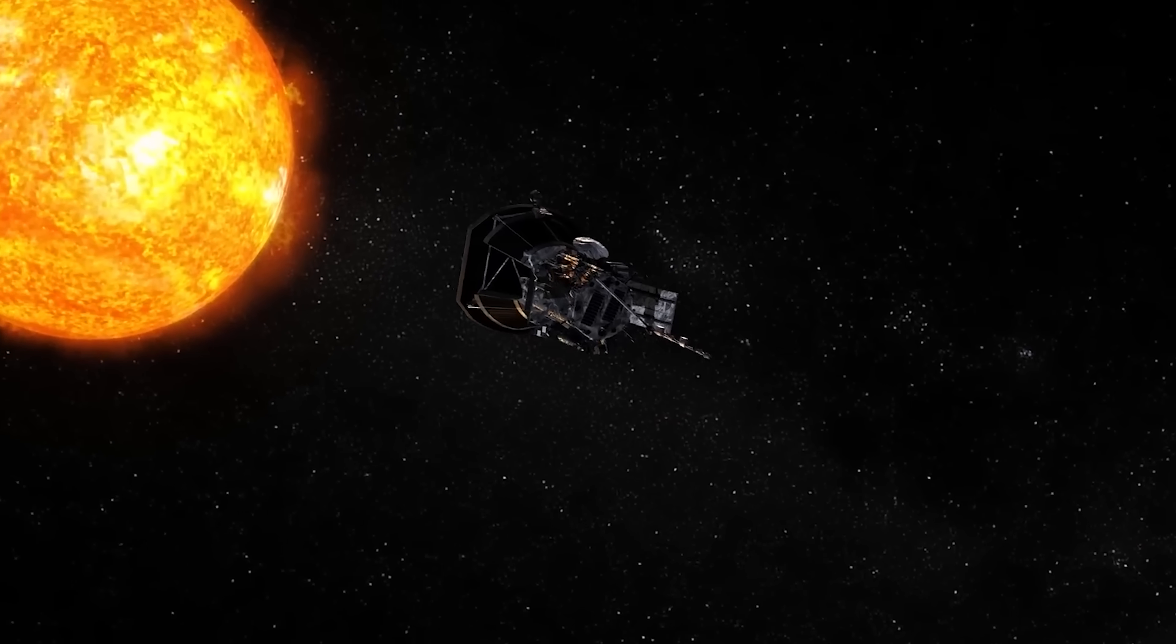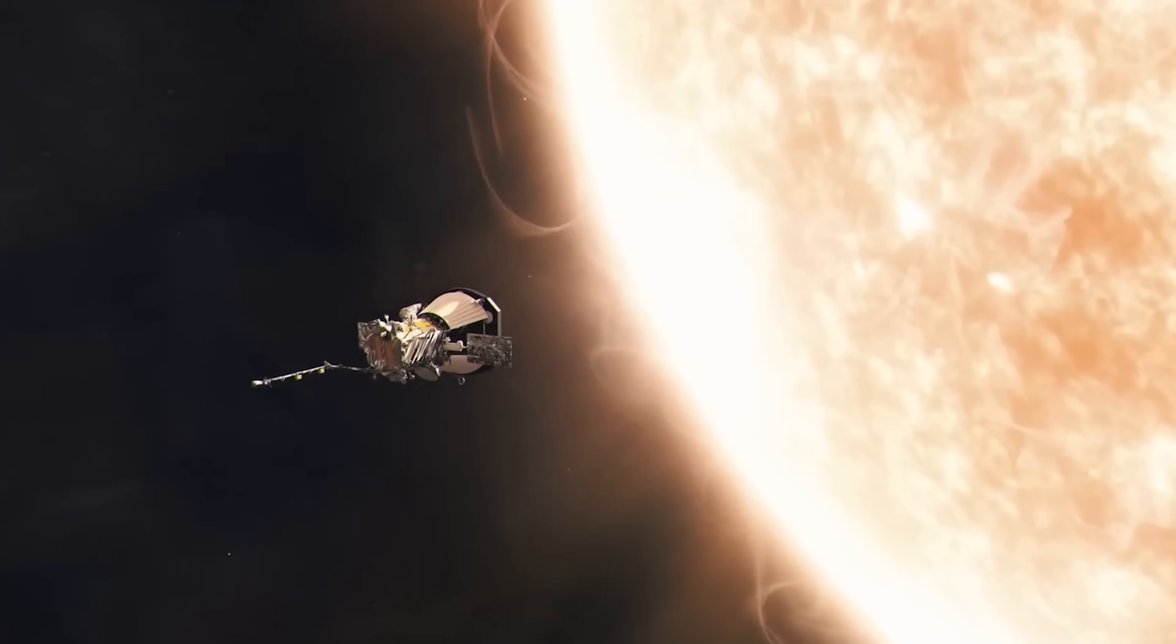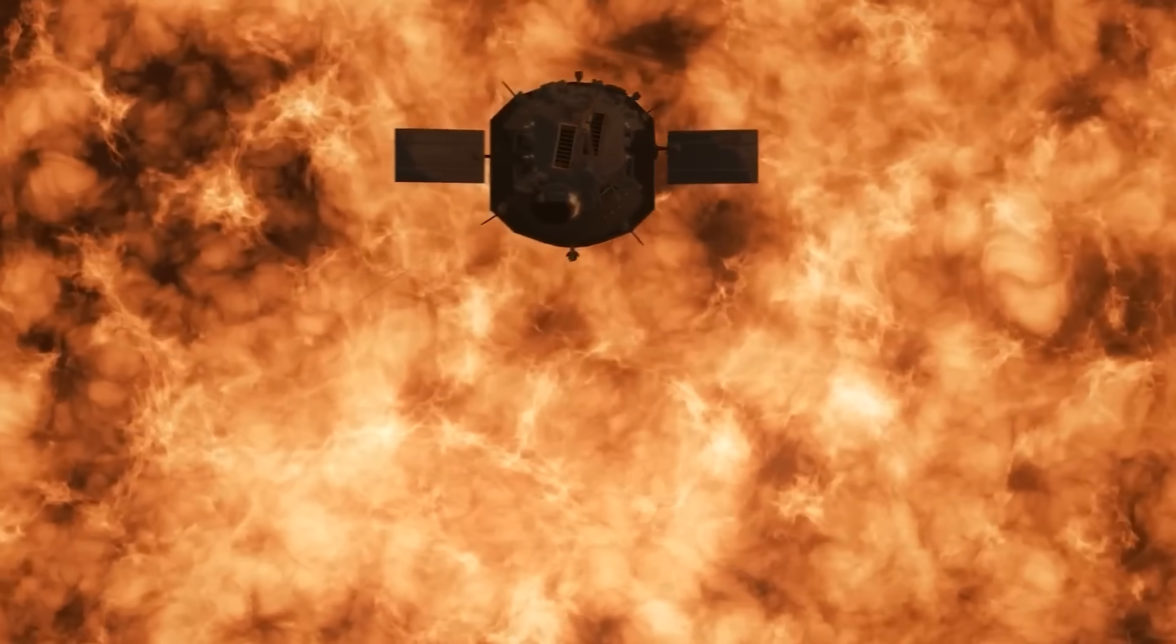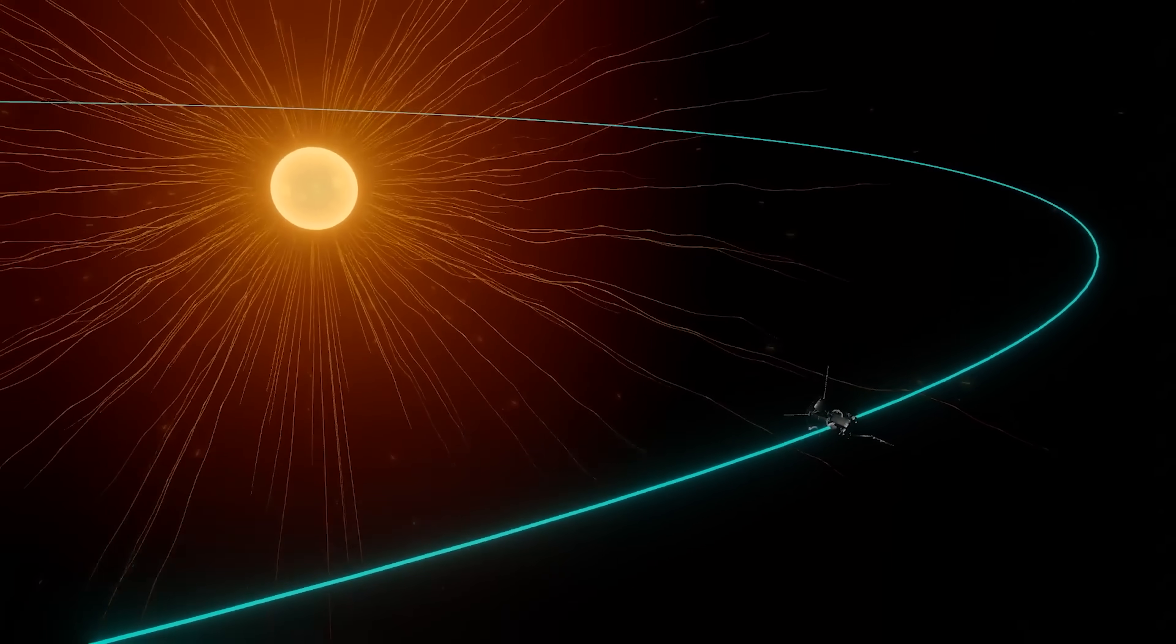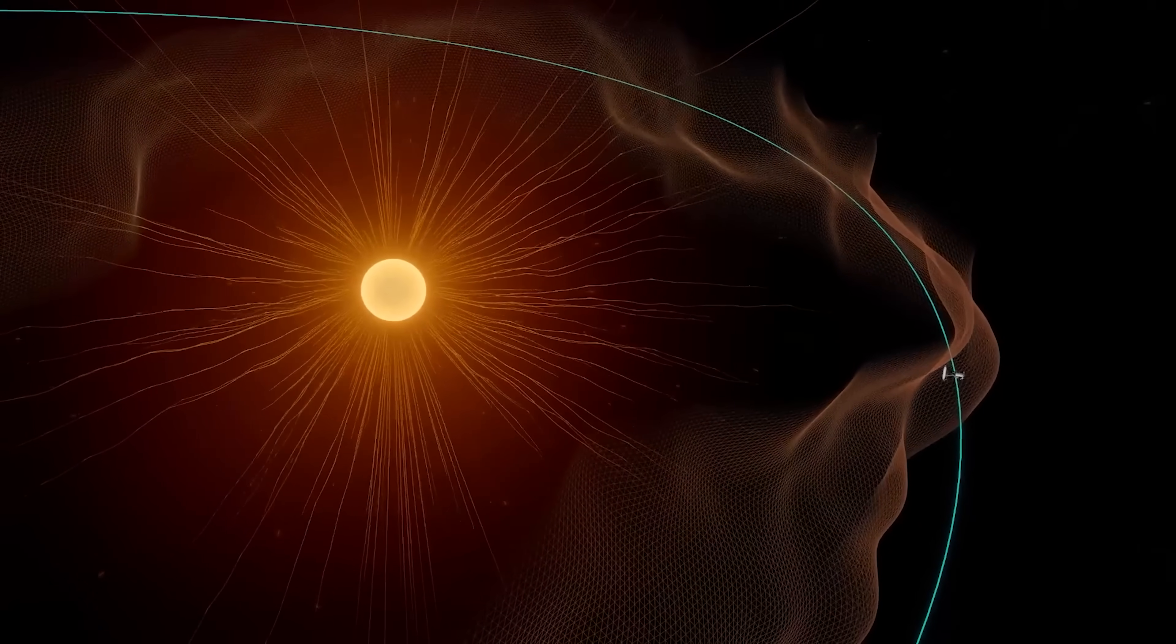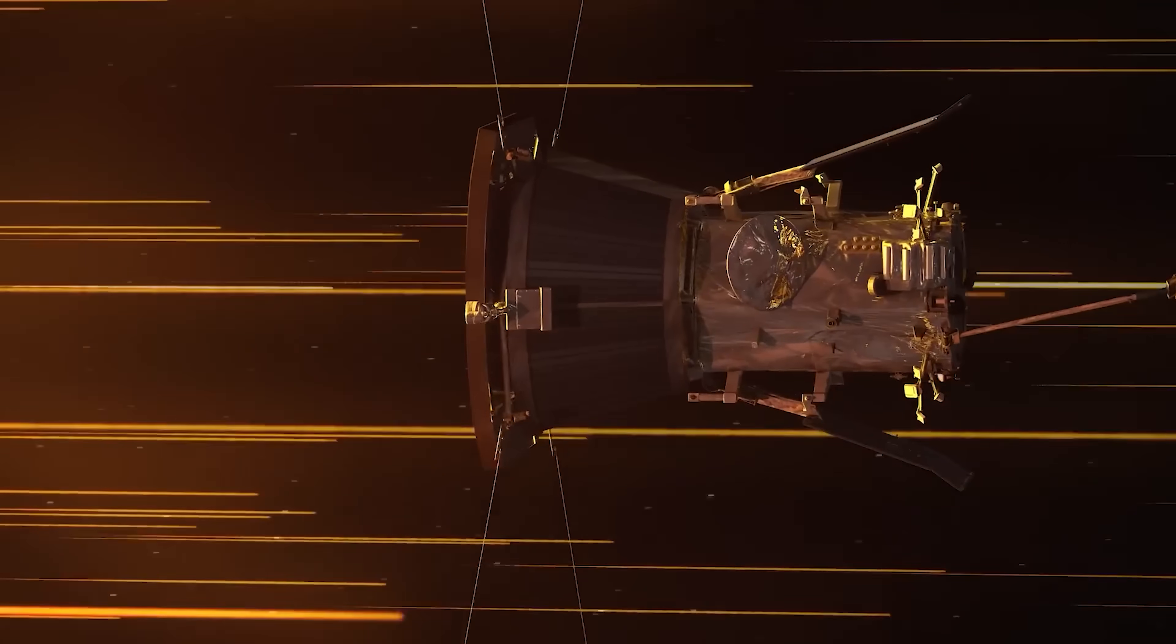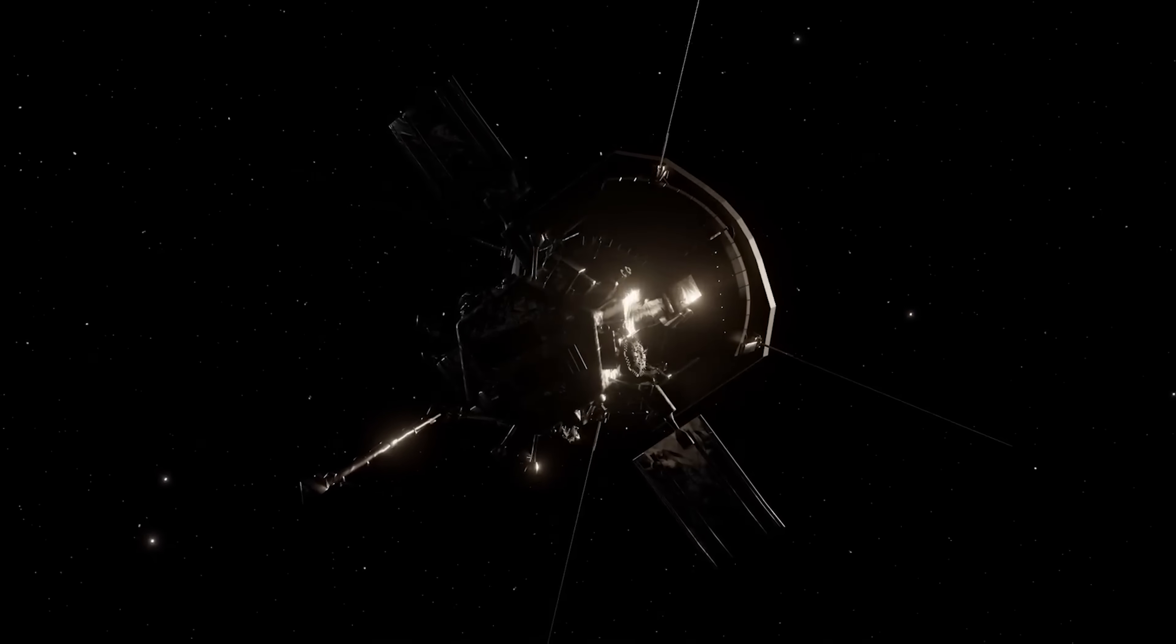Still, this isn't a walk in the park. The probe has to constantly keep its heat shield pointed perfectly at the Sun. Even a tiny misalignment and boom, mission over. That's why Parker is almost entirely autonomous. There's a time delay in communicating with Earth, so it has to think and react on its own to stay alive. It's basically a self-driving car, but flying into hellfire. And it's not just heat. Parker also had to survive intense radiation, micrometeorite impacts, and wild plasma storms that would rip most spacecraft to pieces. Every component, from its solar panels to its scientific instruments, had to be custom-built to handle this insane environment.